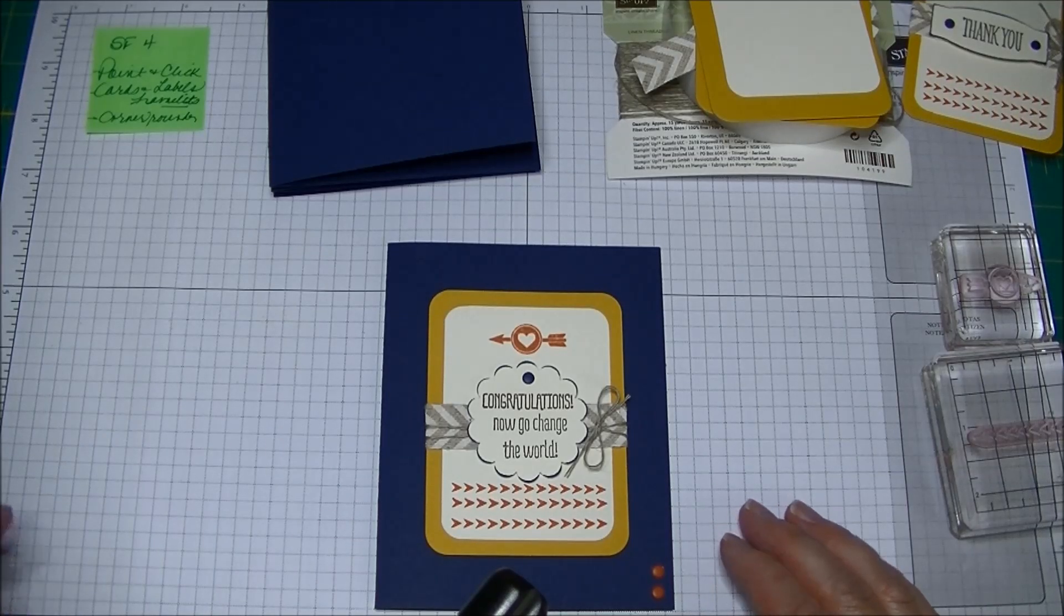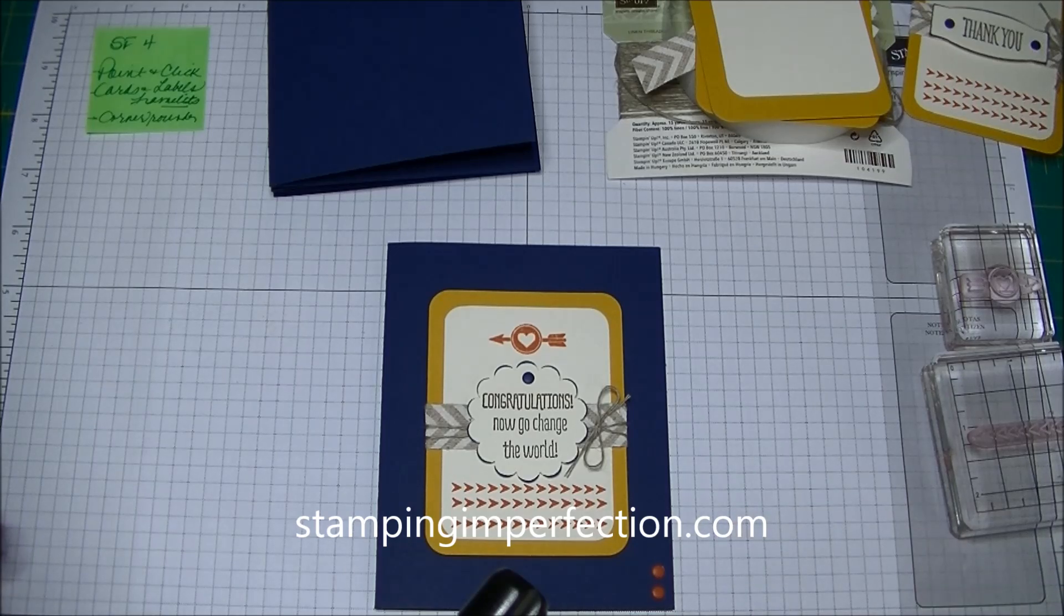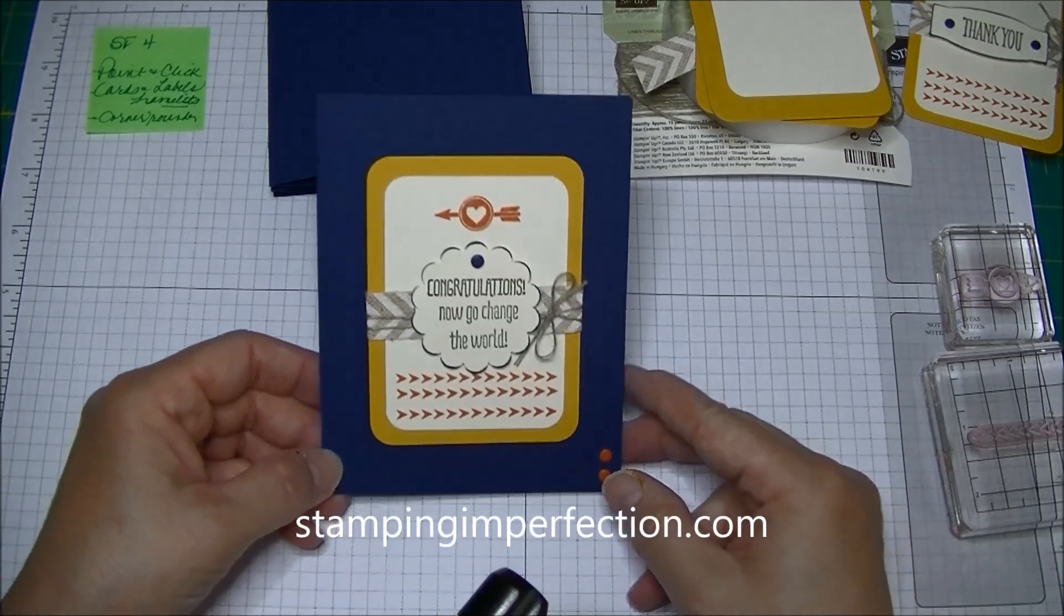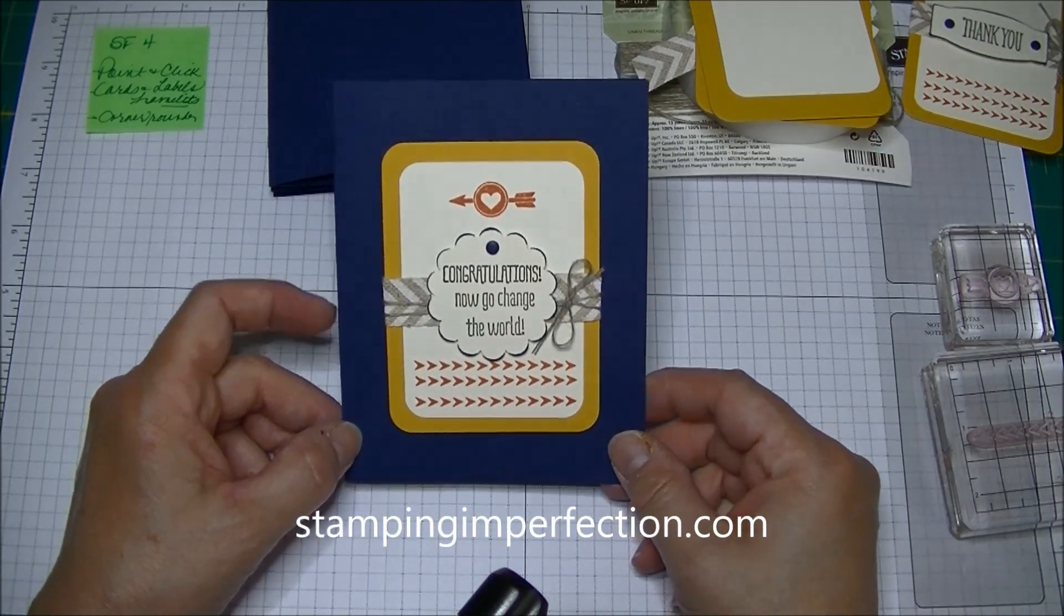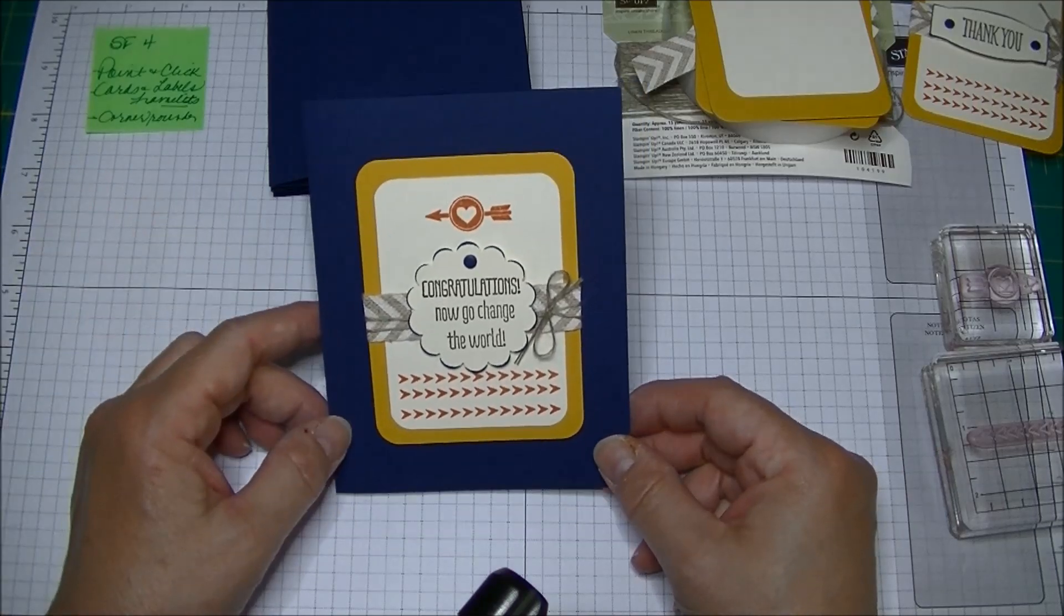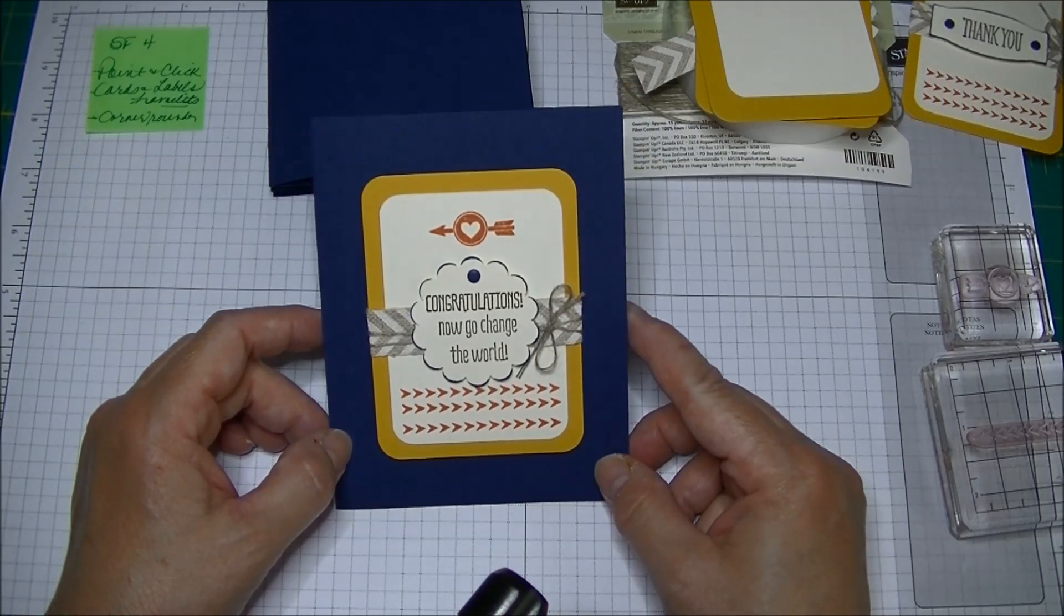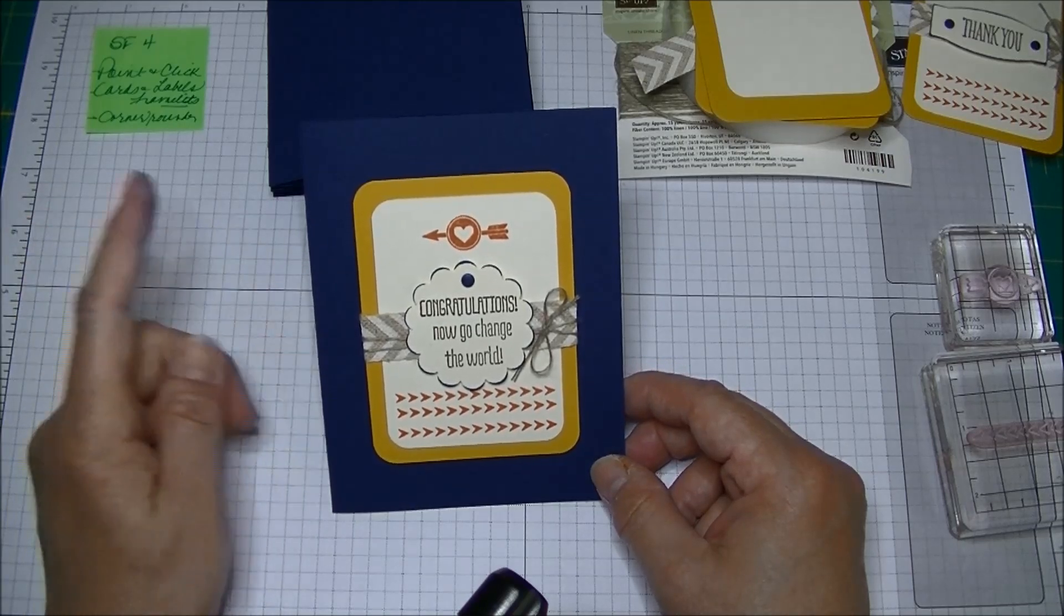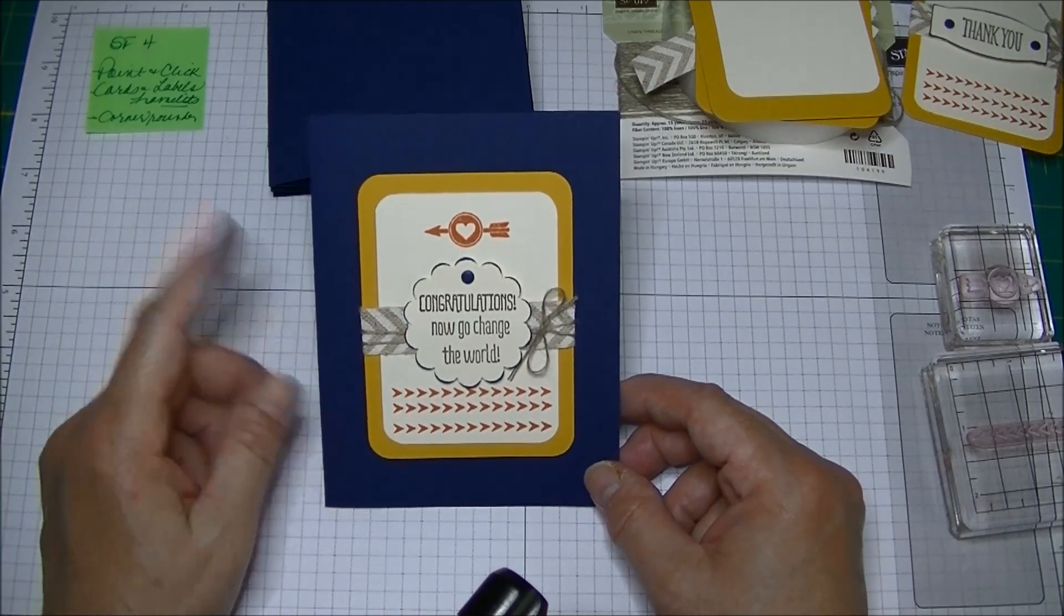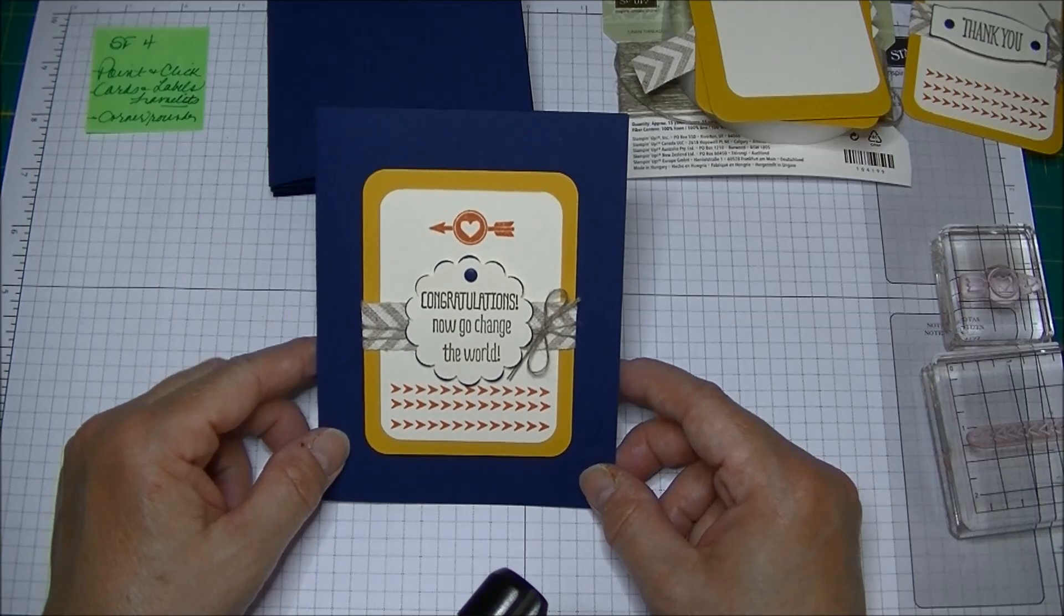Hey Stampers, Kim from stampinginperfection.com. Welcome to my craft room. I created a card for my blog today doing a color challenge. Somebody challenged me to use Night of Navy, Tangerine Tango, Crushed Curry, and Soft Suede, plus one neutral.